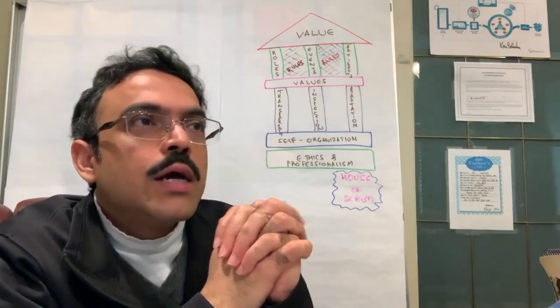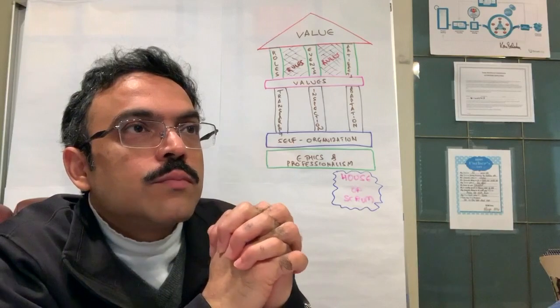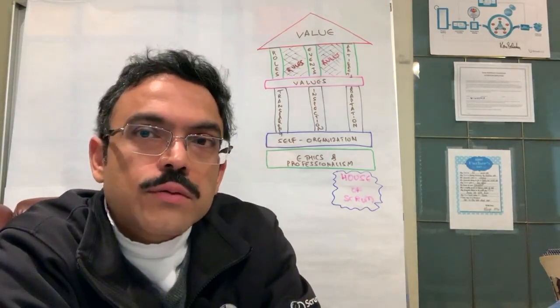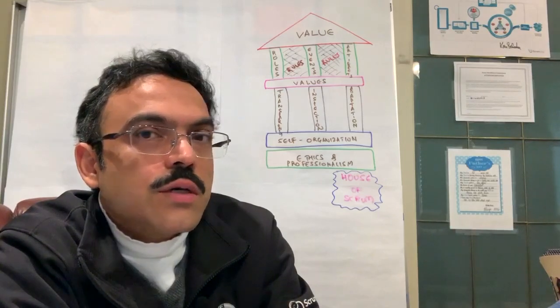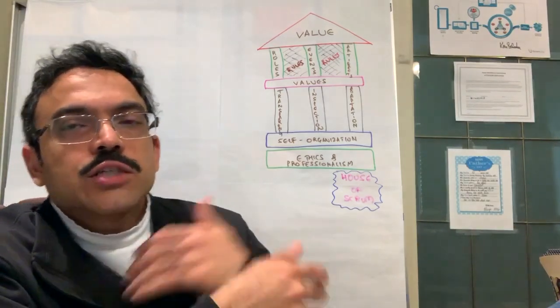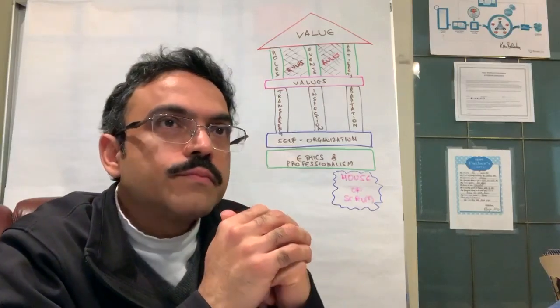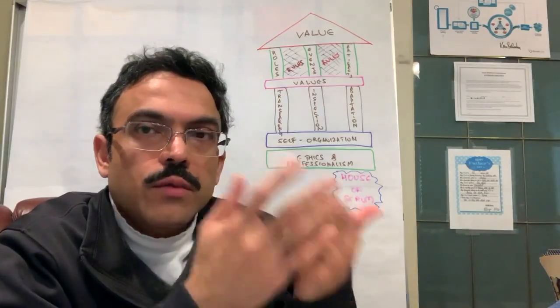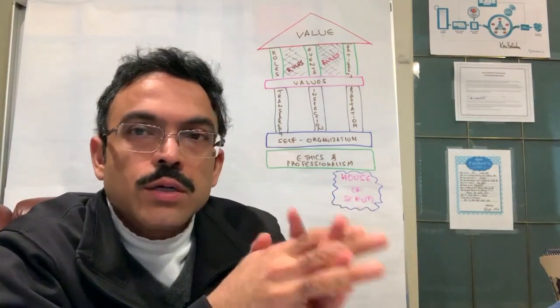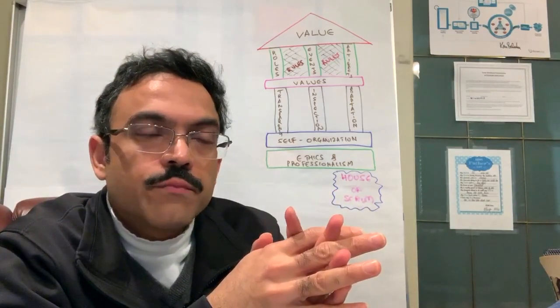But first I want to travel back in time. I want to talk about the professional Scrum Master class that I attended with Ken Schwaber. He was my trainer. This was at Scrum.org headquarters in Boston many years ago. As Ken was explaining the fundamentals of Scrum, he was talking about self-organization and one of our classmates probably spoke on behalf of many of us.